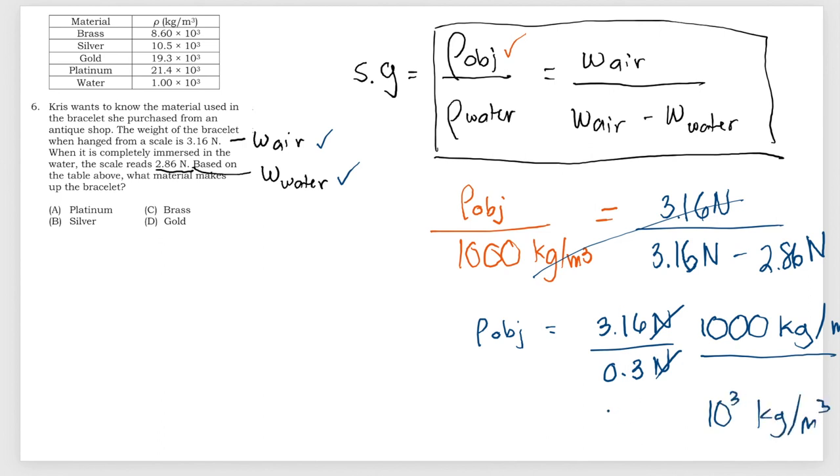And if you divide this, it is 10.53 kilogram meter cube. So that is the density of the object, and the object is...